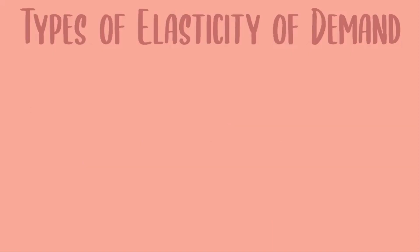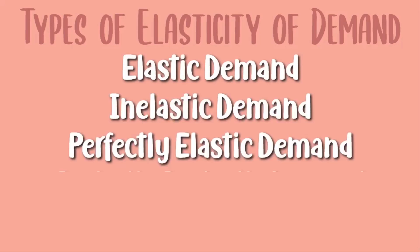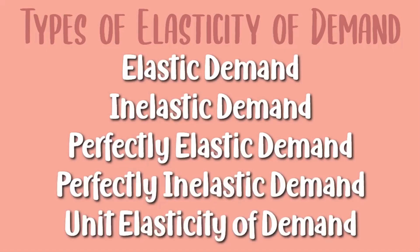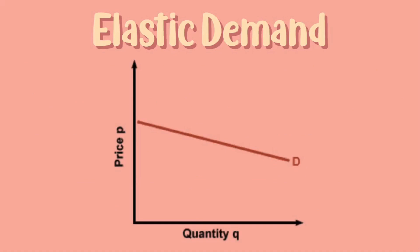Next we'll be looking at the different types of elasticity of demand. First we have elastic demand, inelastic demand, perfectly elastic demand, perfectly inelastic demand, and unit elasticity of demand. Elastic demand is when the quantity demanded changes by a greater percentage than the change in price. Therefore the PED is more than 1. The graph for elastic demand is a shallow slope.